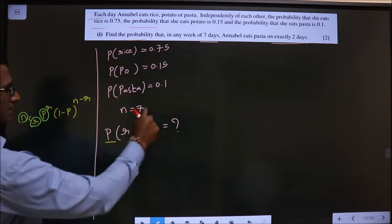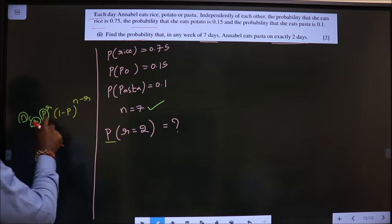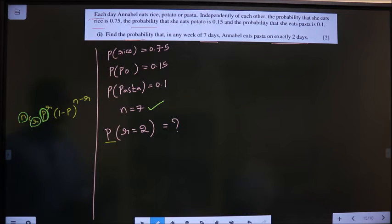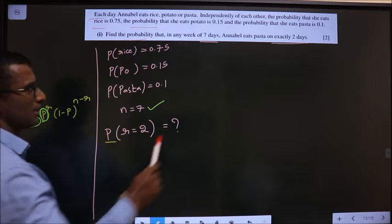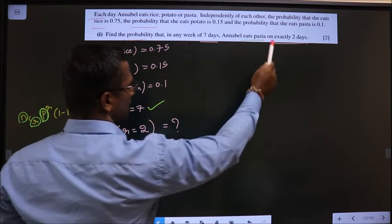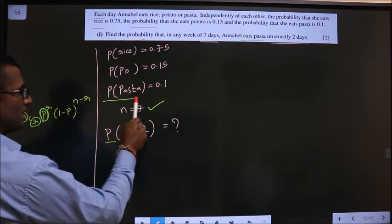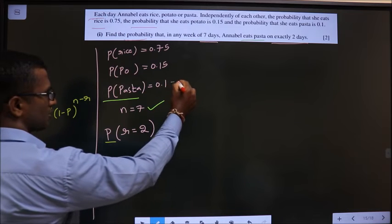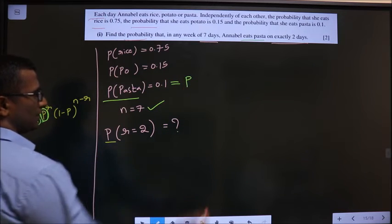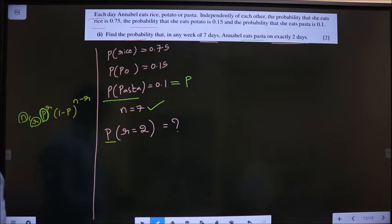So, n is 7. What value will you take for P? That will be decided by this one. She eats pasta, so probability of pasta is 0.1. So this should be taken for P.